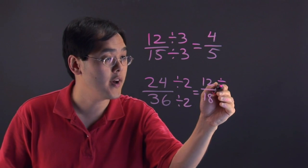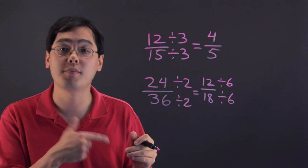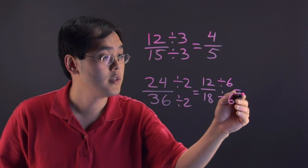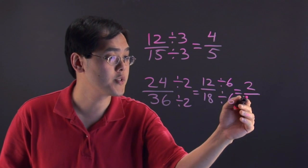So, divide both the top and the bottom, and that's the really important part. You've got to take care of both sides. 12 divided by 6 is going to be 2, and 18 divided by 6 is going to be 3.